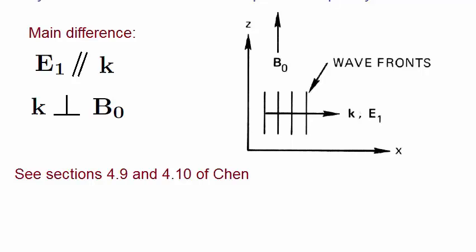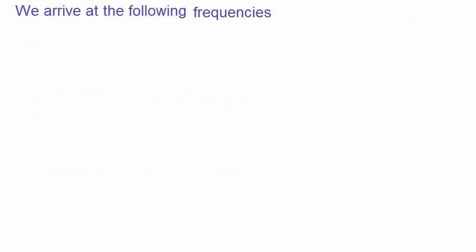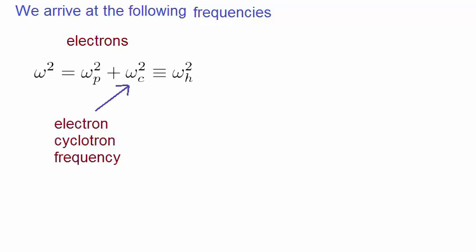For a full derivation using the above assumptions, see sections 4.9 and 4.10 of Chen. We finally arrive at the following frequencies. The electrons have this relationship for the angular frequency, which is a combination of the plasma frequency and the electron cyclotron frequency. This is called the upper hybrid frequency. If you want to imagine how this motion looks like, it is both a combination of the longitudinal oscillations associated with a plasma frequency combined with the gyrations of electron cyclotron motion. But it's important to note that there is no wave vector k in this expression. That is, there's no travelling wave. It's simply an oscillation.